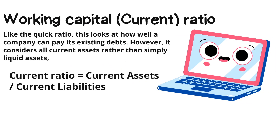Another ratio is the working capital ratio, or the current ratio. Like the quick ratio, this also looks at how well a company can pay its existing debts. However, it considers the current assets rather than simply liquid assets. The current ratio is calculated by dividing the current assets by current liabilities.